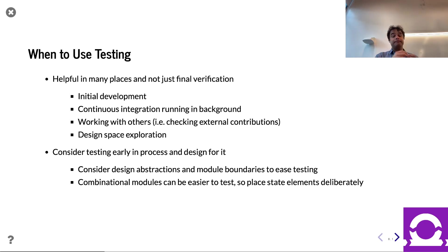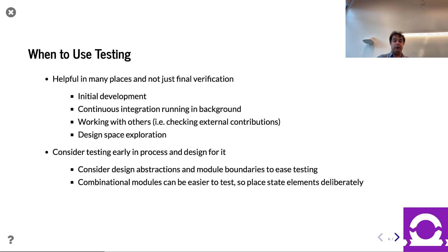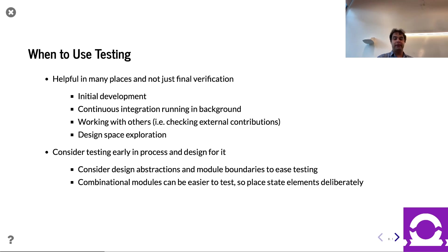Embrace testing and design for it — if you design your modules, make them easy to test. If you have a module where you have no idea how to test it, that suggests what the module is doing is hard to specify and perhaps really complicated — you might think about a different hierarchy or different abstractions. Combinational modules are often the easiest to test. Sometimes you can get by with purely combinational modules that are really easy to test, and in the places where you need state, be more deliberate and encapsulate that complexity more carefully.